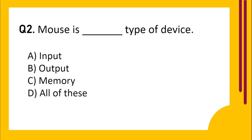Question number 2. Mouse is a dash type of device. Option A: Input. Option B: Output. Option C: Memory. Option D: All of these. Correct answer is Option A: Input.